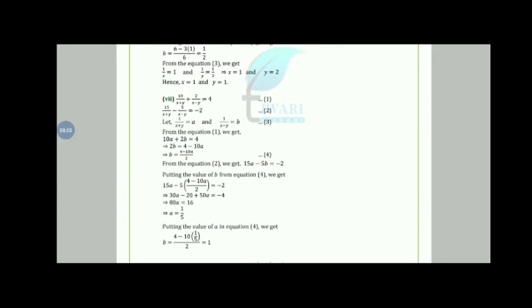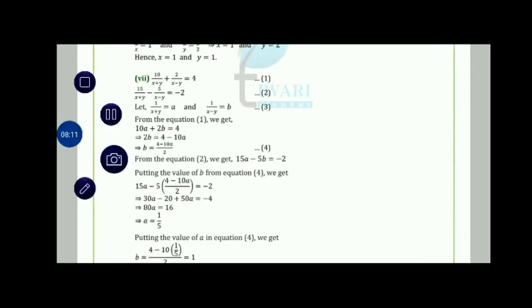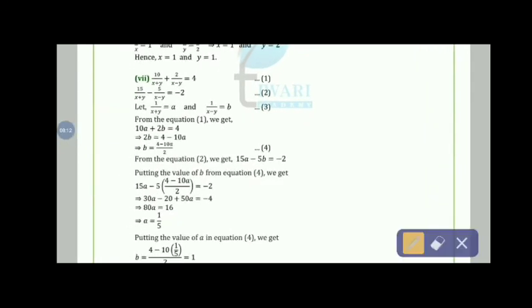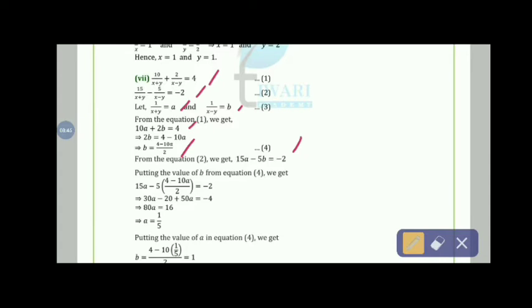In the seventh part: 10/(x+y) + 2/(x−y) = 4 and 15/(x+y) − 5/(x−y) = −2. Let 1/(x+y) = a and 1/(x−y) = b. From equation 1: 10a + 2b = 4, so b = (4 − 10a)/2. From equation 2: 15a − 5b = −2. Substituting: 15a − 5(4 − 10a)/2 = −2.